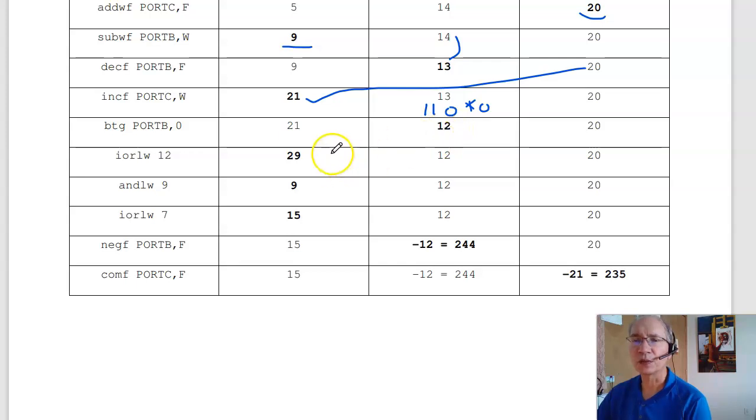Inclusive OR, W with 12. 21 OR 12 is 29. To see that you have to take the bit pattern. 21 is 16 plus 4 plus 1. There's 21. 12 is 0, 1, 1, 0, 0. OR them together I get 1, 1, 1, 0, 1, which is 29 binary.